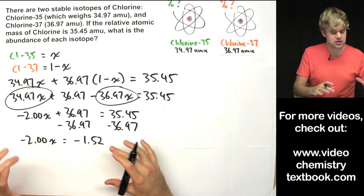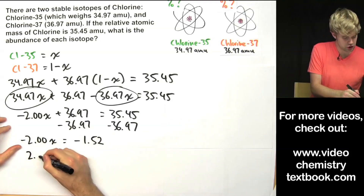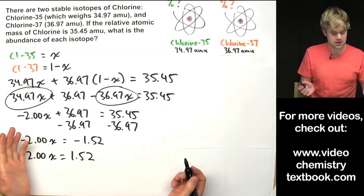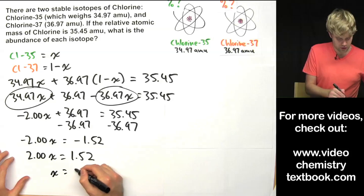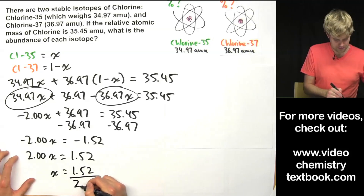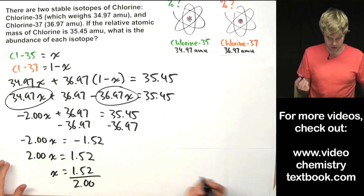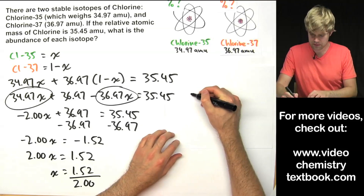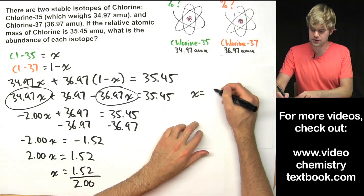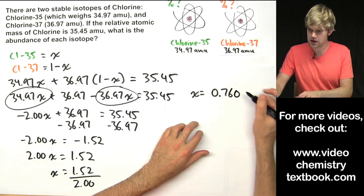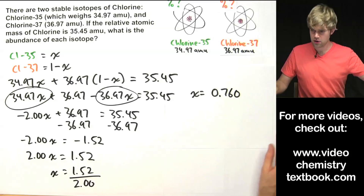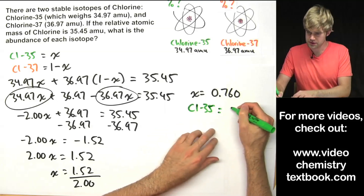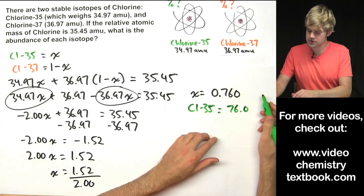Now I want to get rid of the 36.97 from this side, so I subtract 36.97 from both sides, giving me negative 2.00x equals negative 1.52. Both sides are negative so I multiply both sides by negative 1, getting 2.00x equals 1.52. For the last step I divide both sides by 2.0, so x equals 1.52 divided by 2.0, which equals 0.760. That means Cl-35 equals 76.0%.